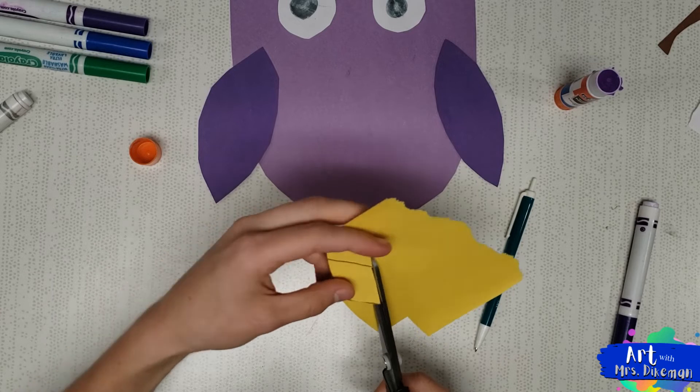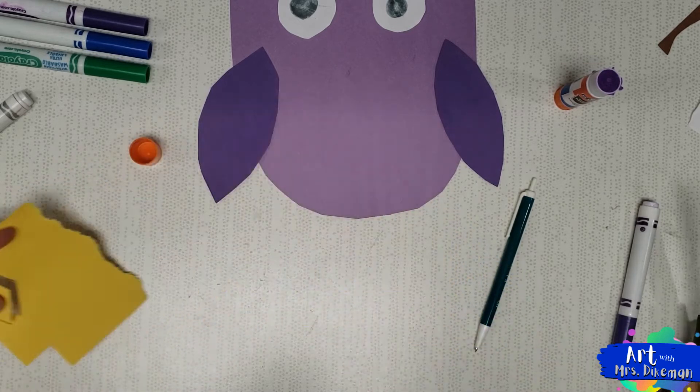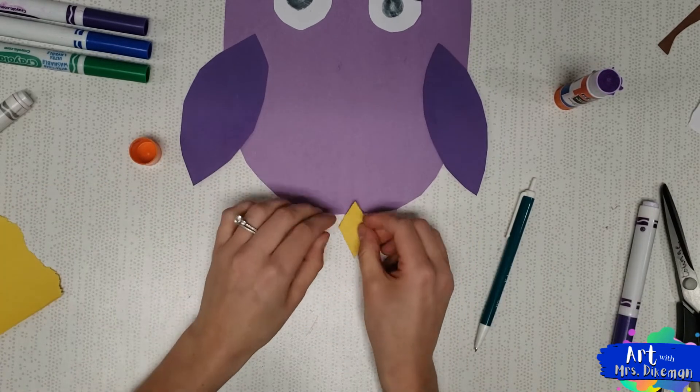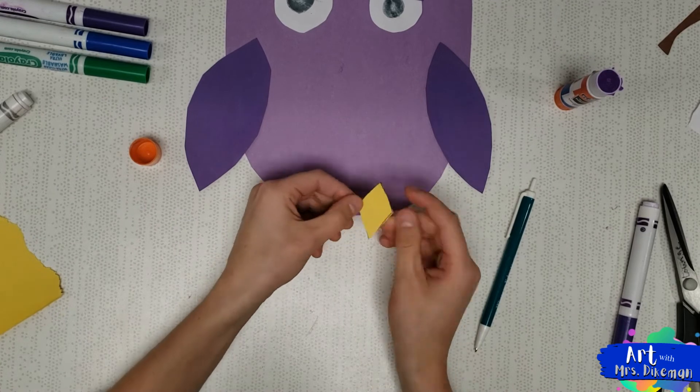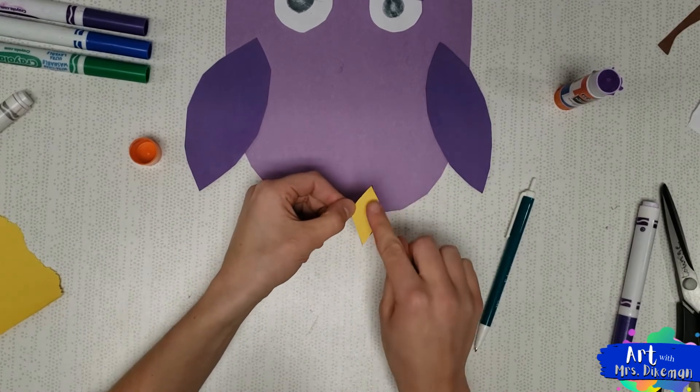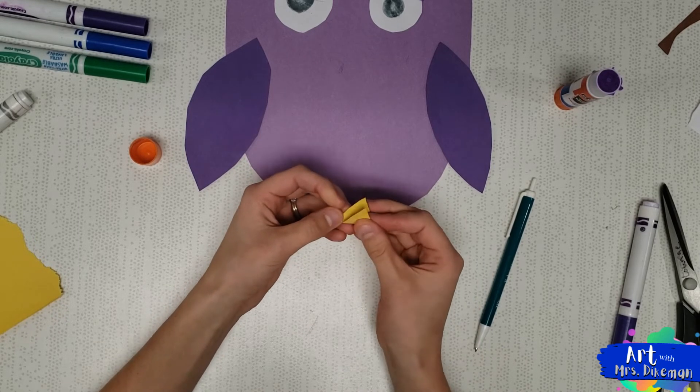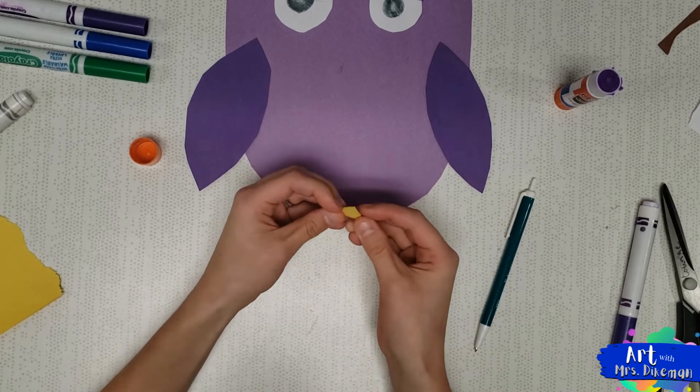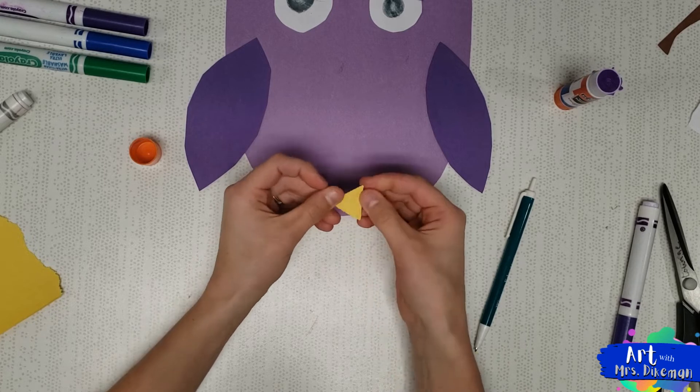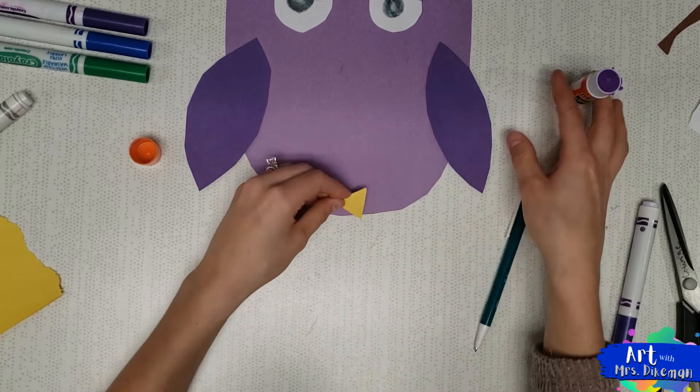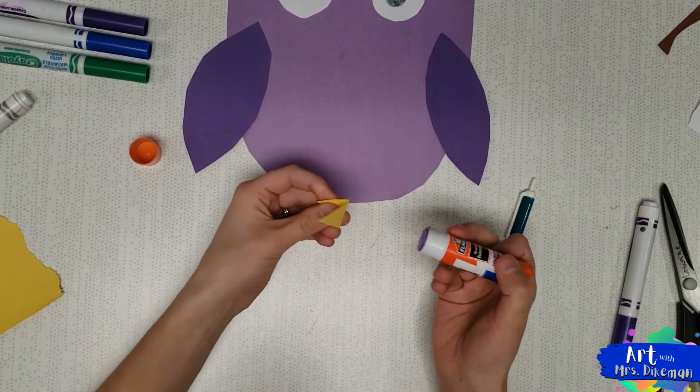Now you're going to fold your diamond in half, so you see how it has a long way and a short way? We're going to go the long way. Take your top and your bottom and fold them so they are together. That way it makes a triangle. With your glue stick, glue one of the triangles on the outside, not the inside, the outside.